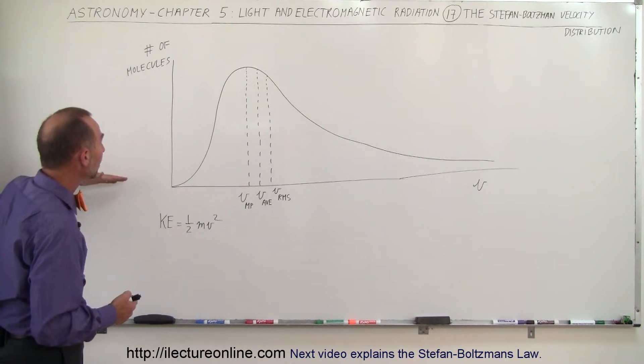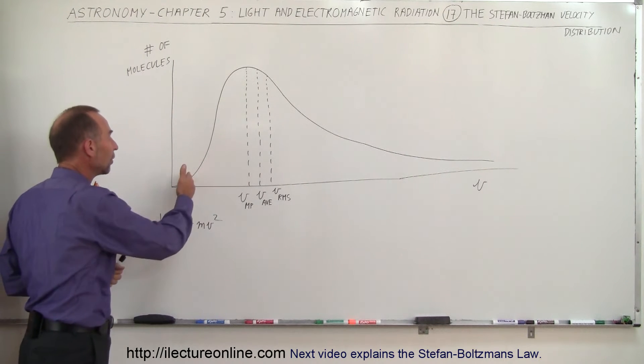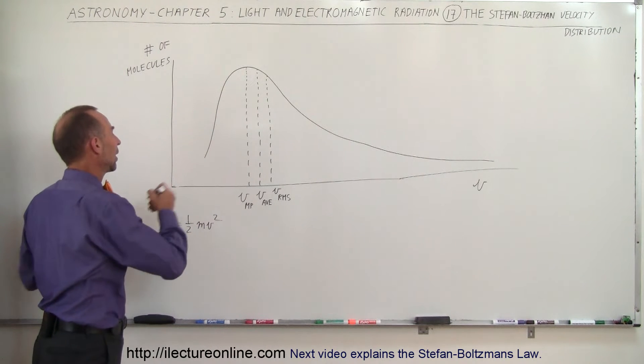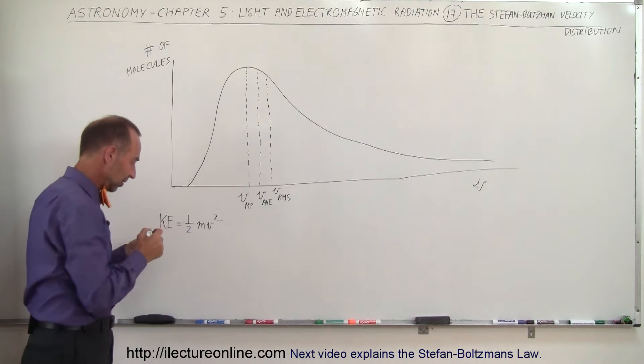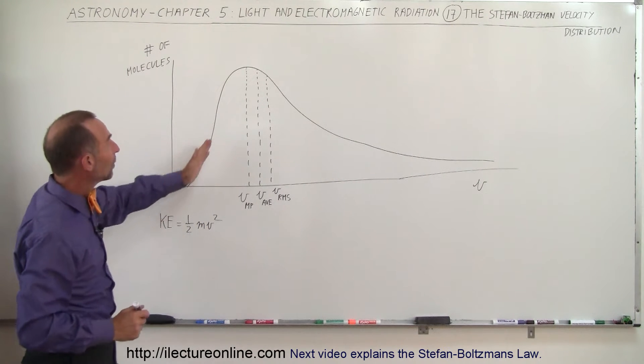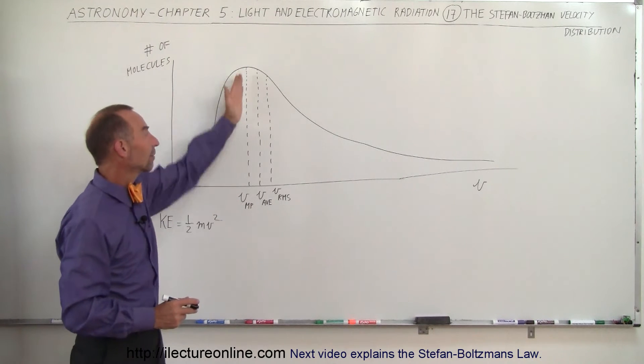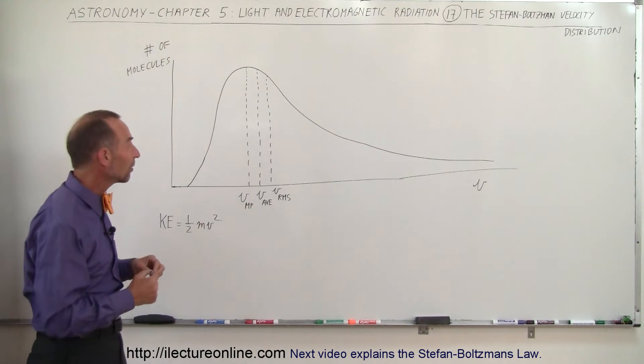And so there's going to be a certain number of molecules that have very low velocities and probably doesn't go all the way to zero. It probably curves in like this. That's probably better representation. And they reach a maximum number of molecules who have this particular velocity. They call that the most probable velocity.